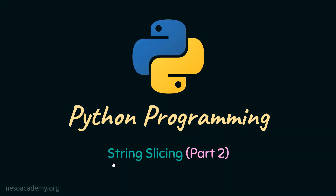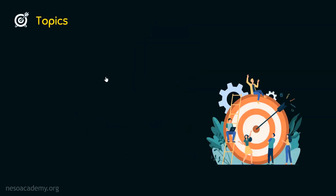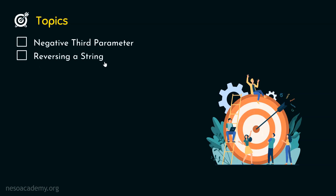In this presentation, we will continue our discussion on string slicing with Python. The first topic is negative third parameter, and the second topic is reversing a string. We will first understand what is negative third parameter.